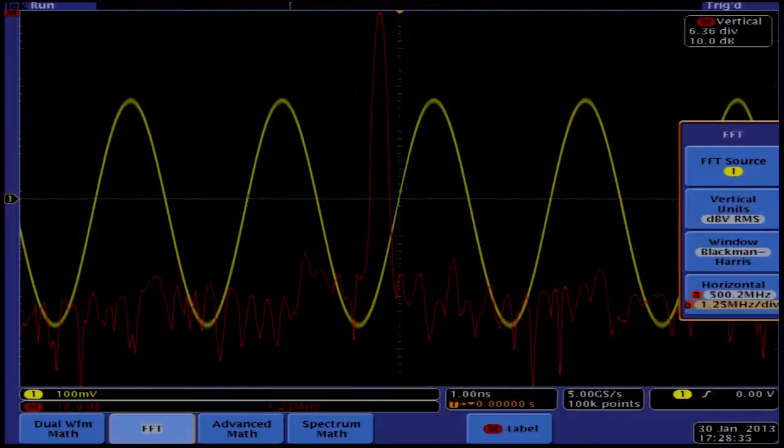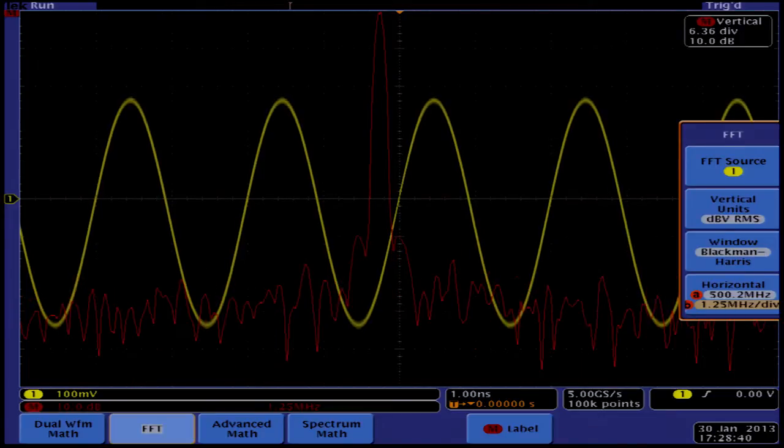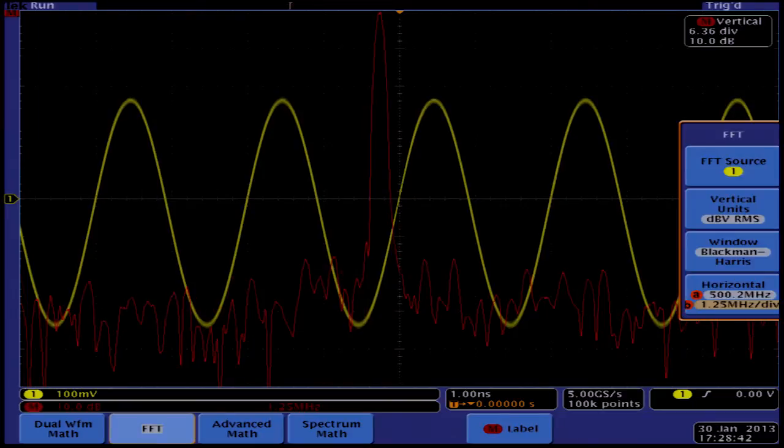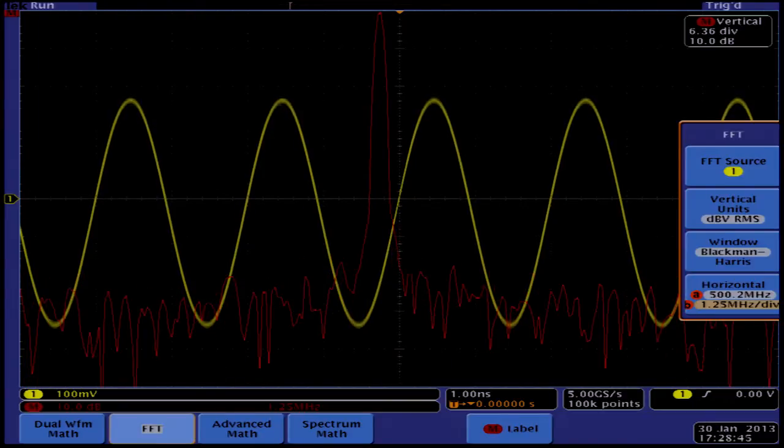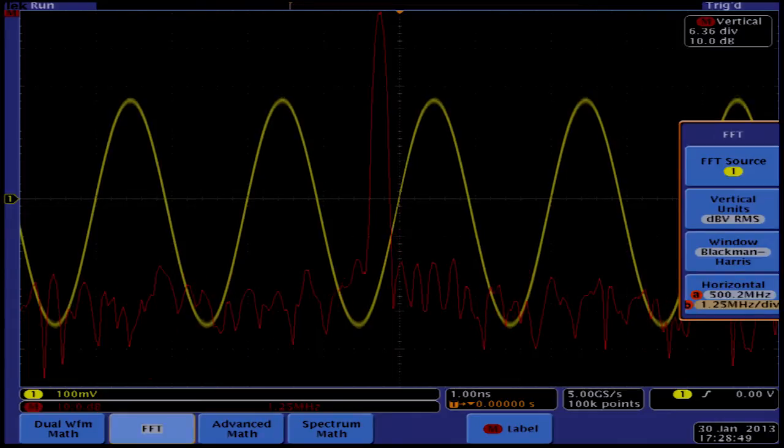To illustrate, let's take this example of a 500 MHz carrier viewed using the analog scope channel on the MDO4000. The trace in yellow is showing a 500 MHz carrier in the time domain. The red trace is showing the same 500 MHz carrier using the FFT function.